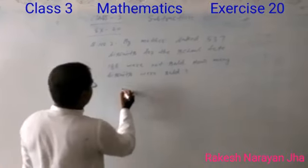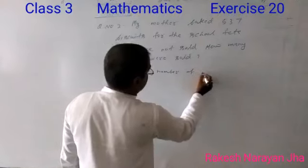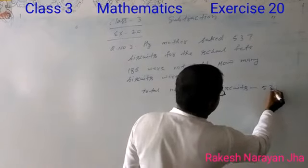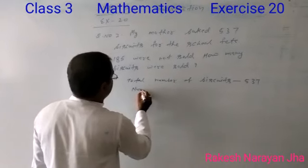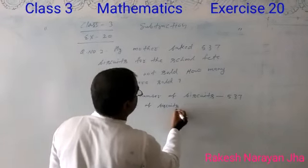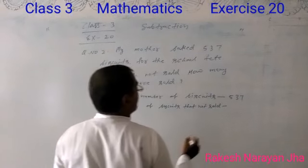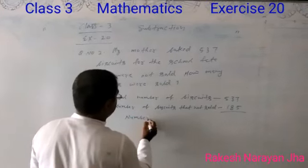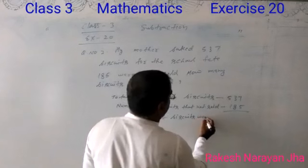In this problem I write: total number of biscuits 537, number of biscuits that's not sold 185, number of biscuits were sold...